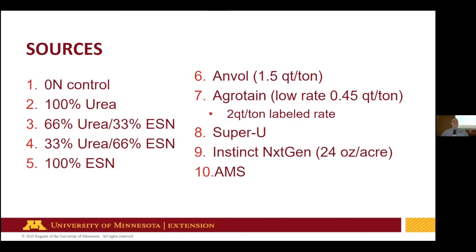The sources used in the source study: 100% urea was our general comparison. Then we had splits with ESN — 33%, 66%, and 100% ESN in combination splits. That's why we used 45 pounds — it's easy to divide by three. The other products were ANVOL at 1.5 quarts per ton, which is a urease inhibitor; Agrotain at a low rate, close to about one quart per ton, which is about half the labeled rate.